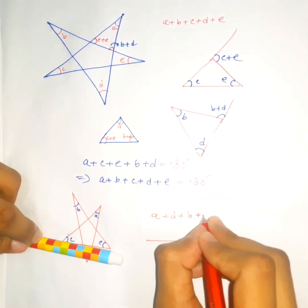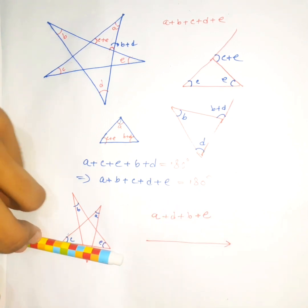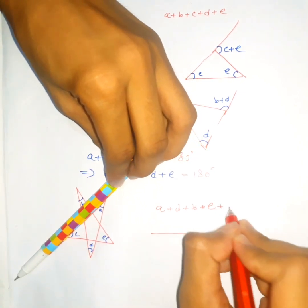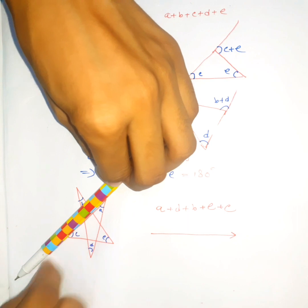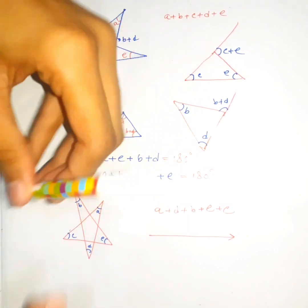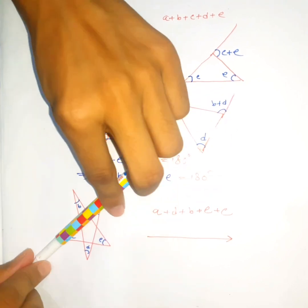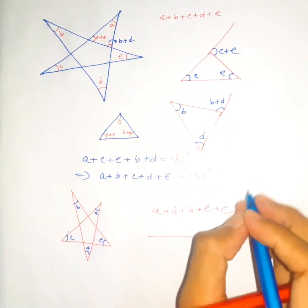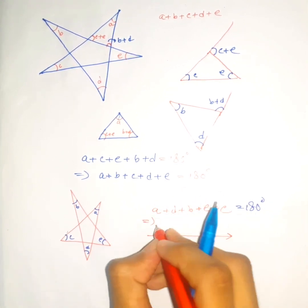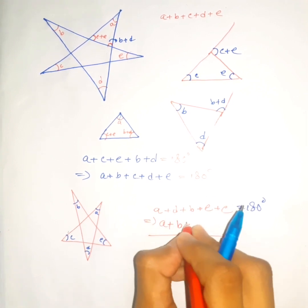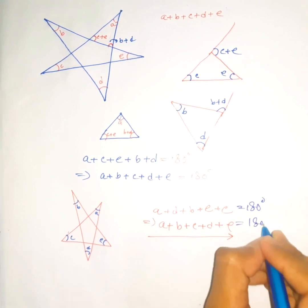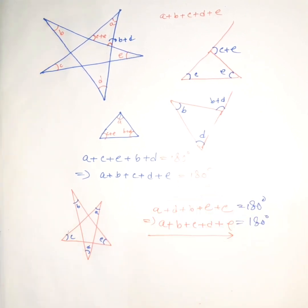Now we rotate it by angle e, and then by angle c. The pen is on the same line but its direction is opposite — we started facing one way and ended facing the other — so the total rotation must equal 180 degrees. Therefore a plus b plus c plus d plus e equals 180 degrees. That's it, thanks for watching!